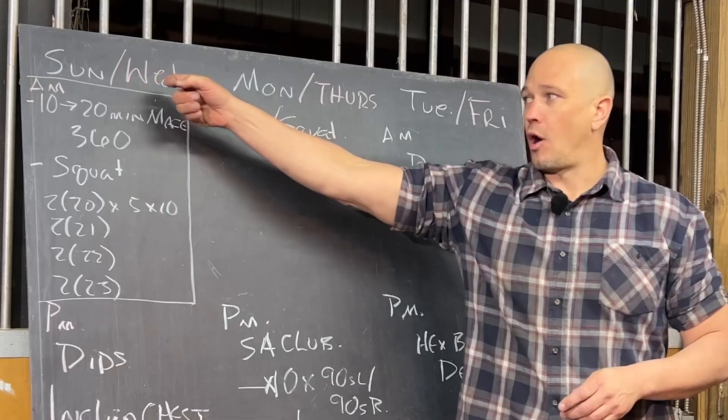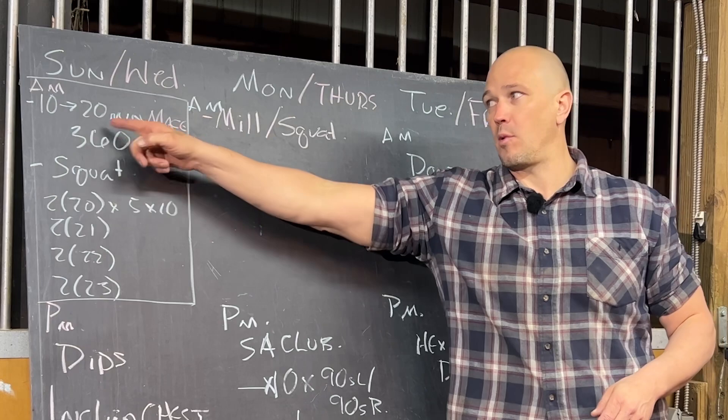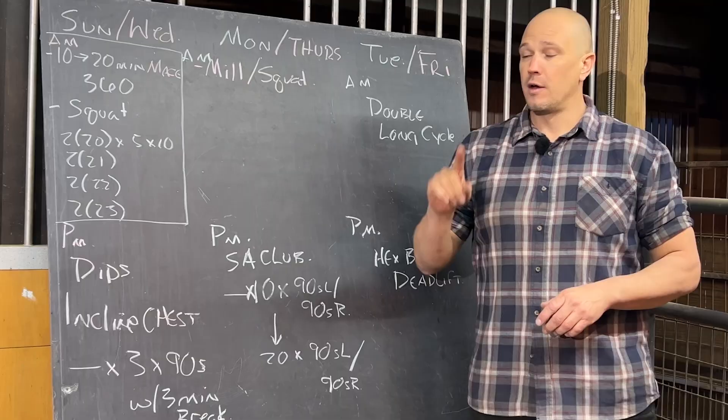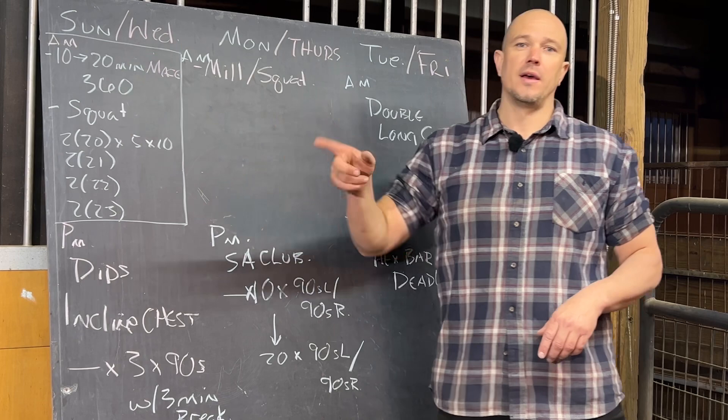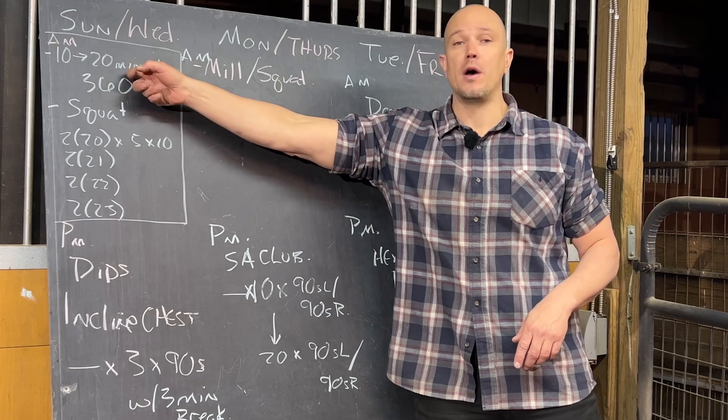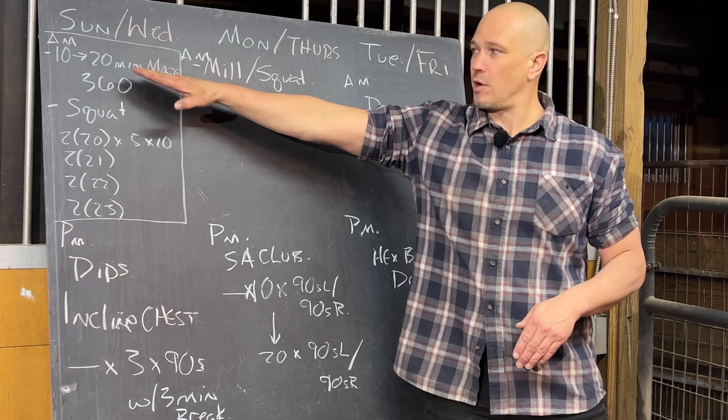On Wednesday, we will do the same thing, but we will add time, and we will walk up towards 20 minutes. So we will add one minute on Wednesday instead of adding weight. We will stay at 20 pounds, and we will go to 11 minutes, and then next week 12 minutes, the week after 13 minutes, 14 minutes, and we will build up towards our 20-minute mark. Very simple. Be very good at 360s. Focus on your breathing. Sunday goes up weight. Wednesday goes up in time.